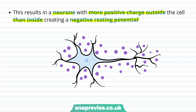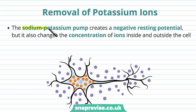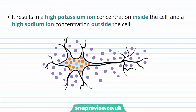Even though we say the neuron is at rest, it's actually working very hard — using ATP to send positive charges outside the cell so that this negative membrane potential is ready in case an action potential comes along. The sodium potassium pump also changes ion concentrations inside and outside the cell. Over time, there is a massive buildup of sodium outside the cell and a massive buildup of potassium inside the cell. As a result, there is a high potassium ion concentration inside and a high sodium ion concentration outside.